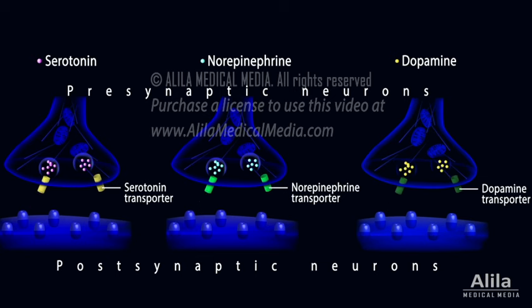This is accomplished by special protein transporters which take these neurotransmitters back to presynaptic neurons. A portion of the neurotransmitters is recycled, while the remaining is degraded by the enzyme monoamine oxidase.